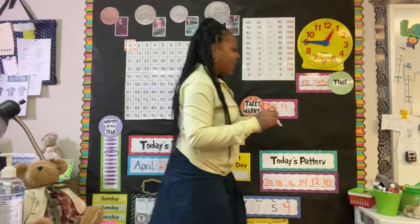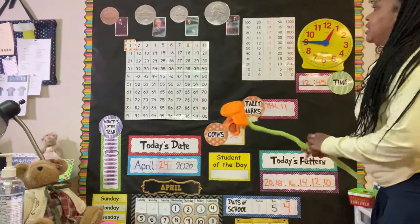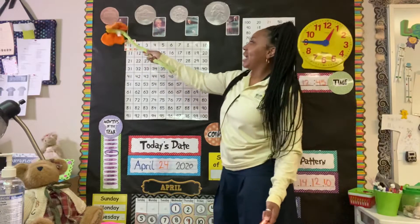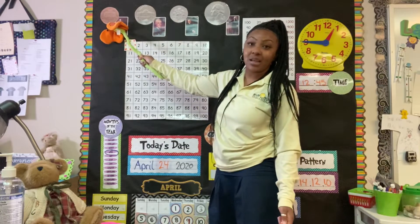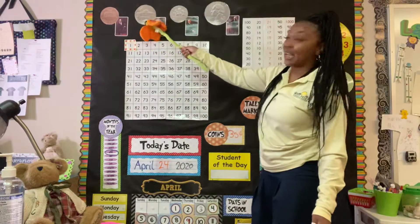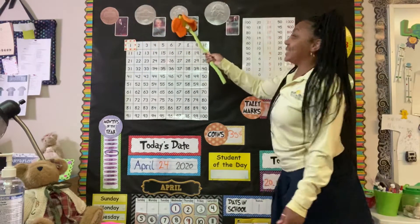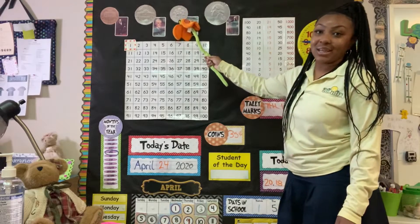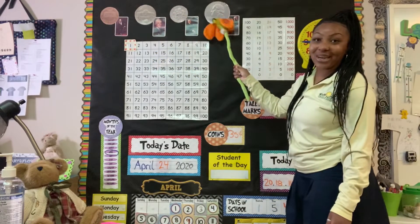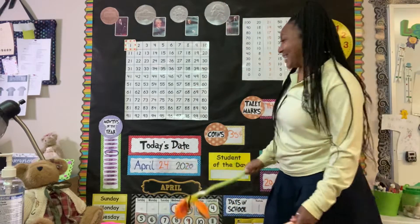All right, let's go over coins. Ready? Our penny is one cent. The nickel equals five cents. The dime equals ten cents. And our quarter equals 25 cents. Good job.